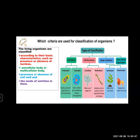So which criteria are used for the classification of organisms? We have studied about this in lower classes. There were various criteria, like on the basis of basic characteristics, such as presence or absence of nucleus. On the basis of this, organisms were classified as prokaryotic and eukaryotic. So that was the first criteria.